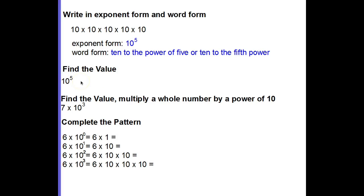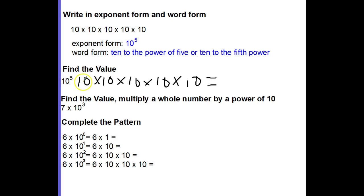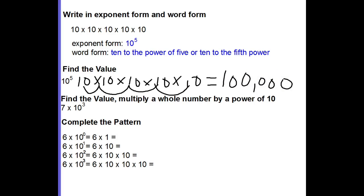Next, you might be asked to find the value of 10 to the fifth power. Pause the video and see how you would find that value. Hopefully you came up with 100,000. We can see that 10 times 10 is 100; 100 times 10 is 1,000; 1,000 times 10 is 10,000; and 10,000 times 10 is 100,000. There is also a pattern we should notice when looking at the value of 10 to the fifth power.